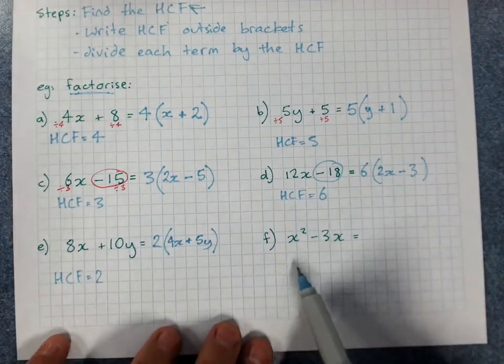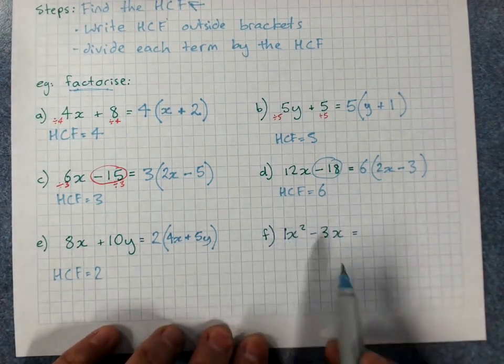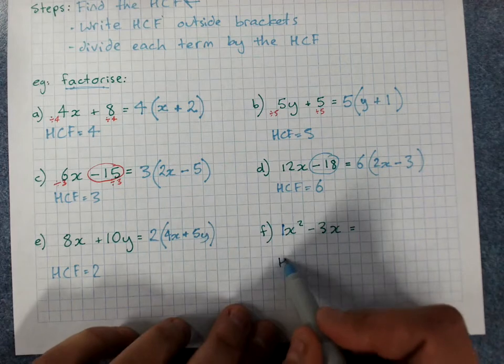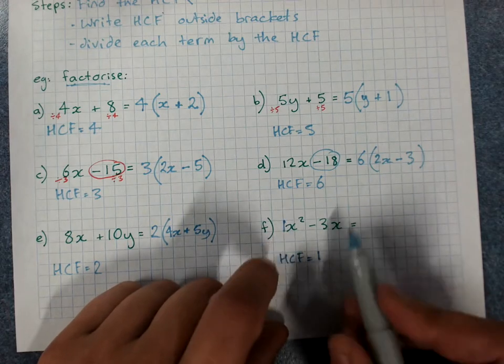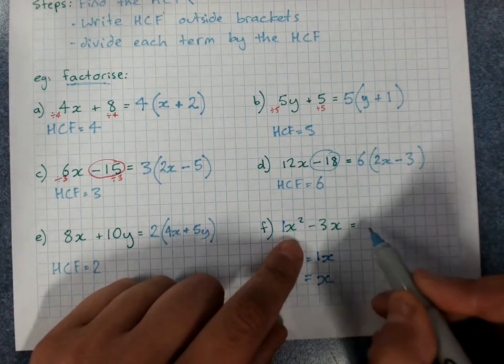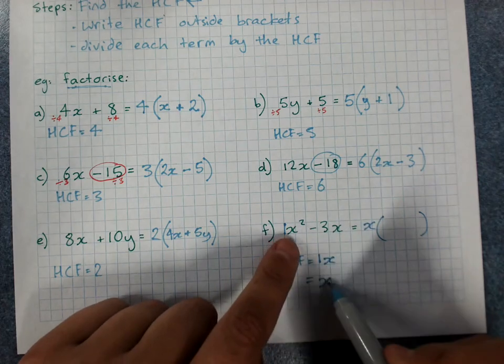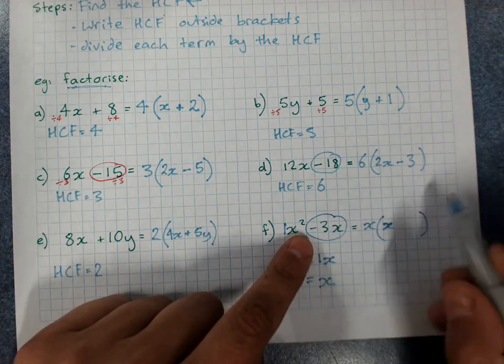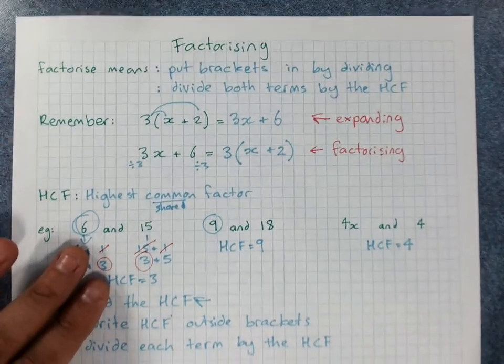Last example. x squared minus 3x. Getting to extensions now. That's a 1. There's no point in having a 1. Does 1 go into 3? Sure it does. But dividing by 1 doesn't help me. But x squared and x. x goes into both of them. The HCF is 1x or just x. Put the HCF out the front. x squared divided by x is x. There's a negative. Circle it. Negative 3x divided by x is negative 3. Bit of extension question there. That was factorizing.